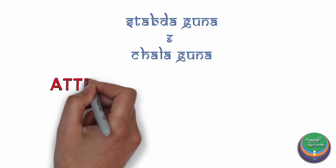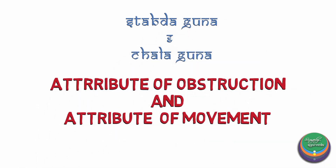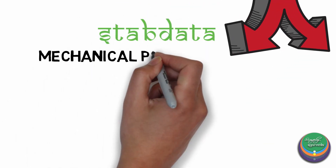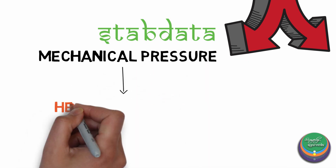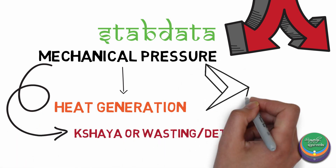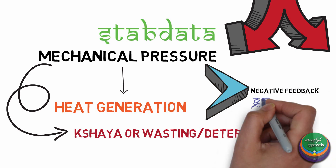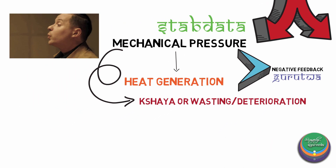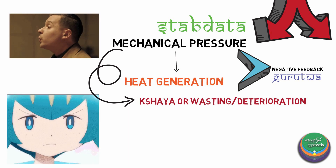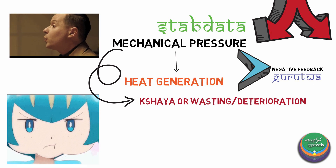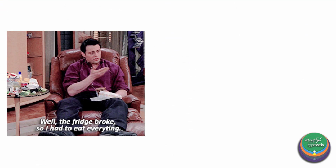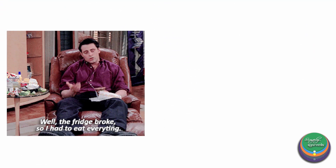Clinically, Vayu acts by virtue of Stabda and Chala gunas, giving rise to two probable modes of action. Stabdata causes mechanical pressure, and due to this pressure heat is generated, causing Kshaya ultimately. This provides negative feedback by causing Gurudva. For example, when you blow air from your mouth it is expelled easily, but if you shut your lips and try blowing, due to the obstruction to the flow of air, your cheeks feel warm. This is also why you feel uncomfortable when you overdo it.